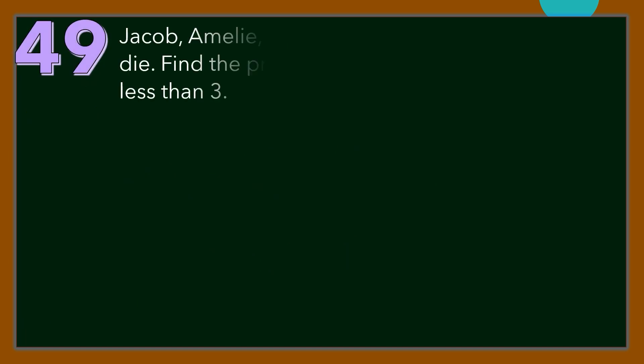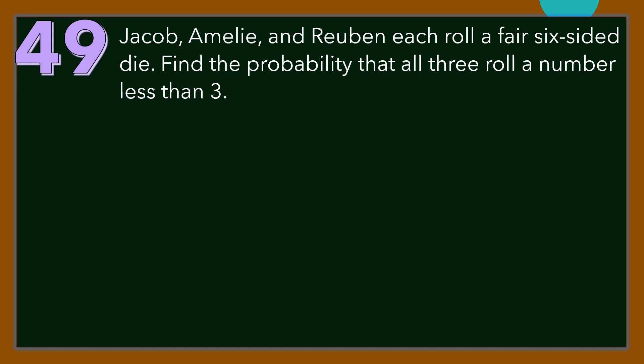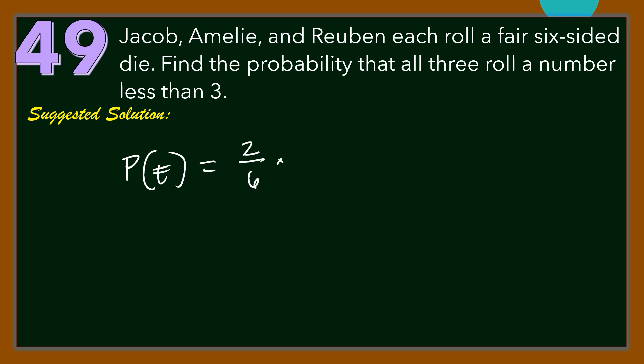Number 49. Jacob, Amelie, and Rayugan each roll a fair 6-sided die. Find the probability that all 3 roll a number less than 3. To roll less than 3, one should get either 1 or 2, so that is 2 over 6 for each person. Let E be the event that all 3 roll a number less than 3. Then the probability of E equals 2 over 6 times 2 over 6 times 2 over 6, which is 8 over 216, simplifying to 1 over 27.